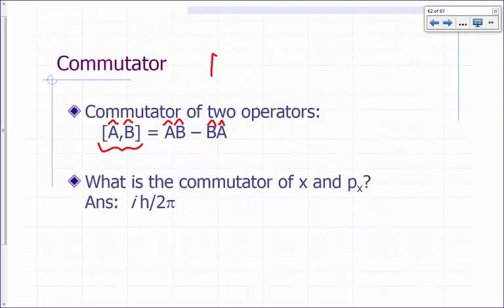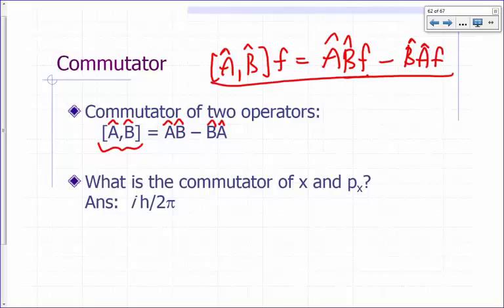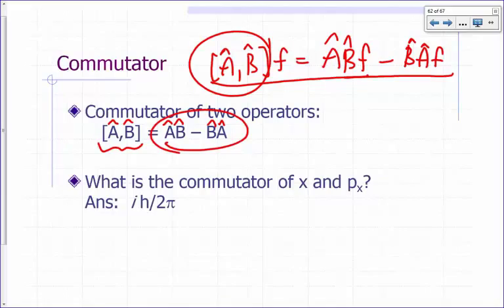So if I were to say a-hat, b-hat, operating on function f, you're going to do b first on function f and then apply operator a. Then switch the order: do a first, apply it on function f, and then do operator b on the result. So that's what commutator means — the commutator is just another operator. It's the difference of these two product operators.